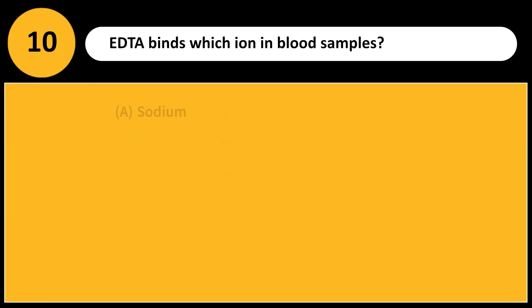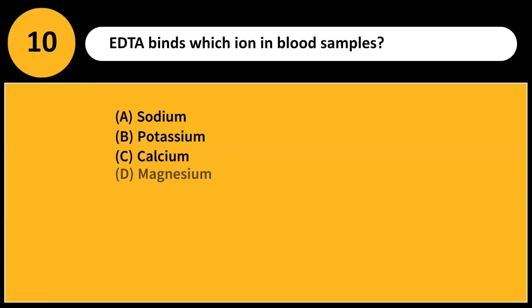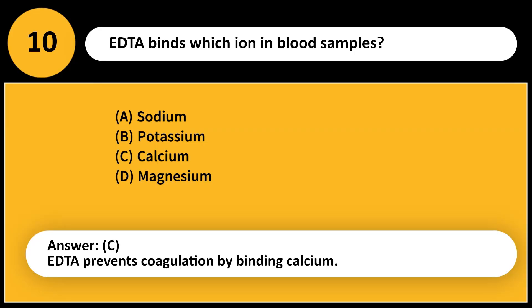EDTA binds which ion in blood samples? A. Sodium. B. Potassium. C. Calcium. D. Magnesium. Answer: C. EDTA prevents coagulation by binding calcium.